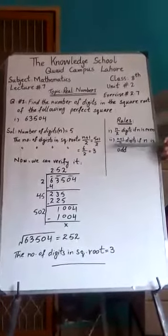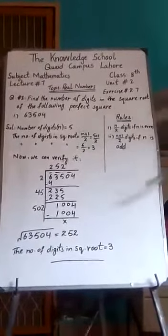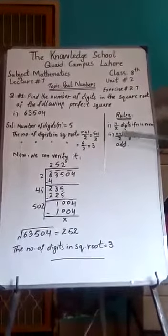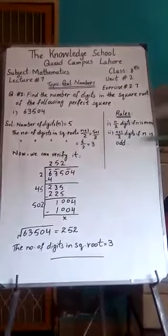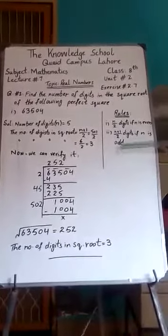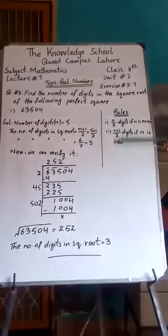Second rule yeh, agar jaise hamne iske number of digits count kiye, woh odd number 5 a raha. Usko solve karne ka method hai n plus 1 divided by 2 digits if n is odd. Odd numbers ko hamari paas a raha hai, so ham n plus 1 divided by 2 wala formula lagayenge.